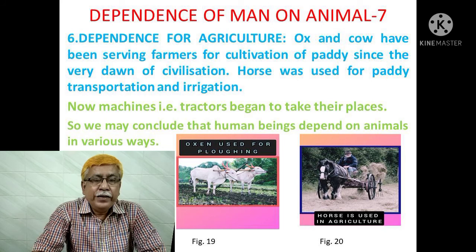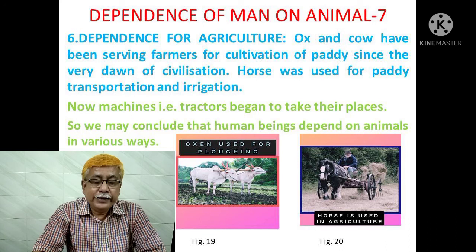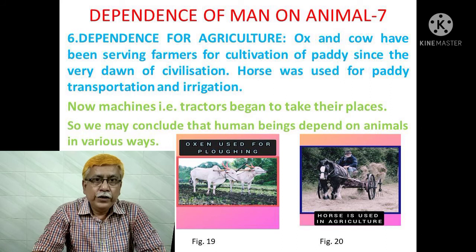Six, dependence for agriculture. Oxen and cows have been serving farmers for cultivation of paddy since the very dawn of civilization. Horses were used for paddy transportation and irrigation. Now machines, that is tractors, have begun to take their places. We may conclude that human beings depend on other animals in various ways. Figure 19 shows oxen used for ploughing, and figure 20 shows a horse used in agriculture.